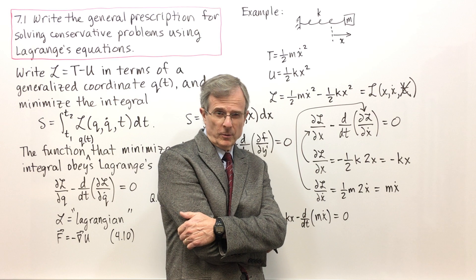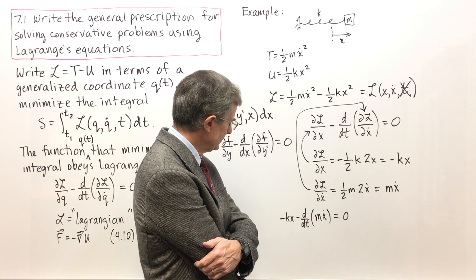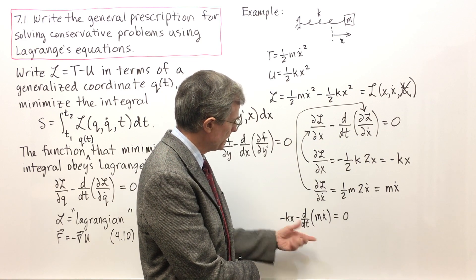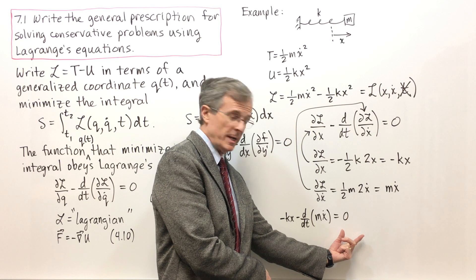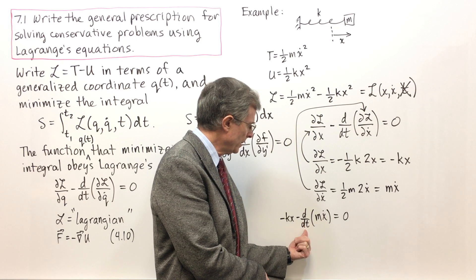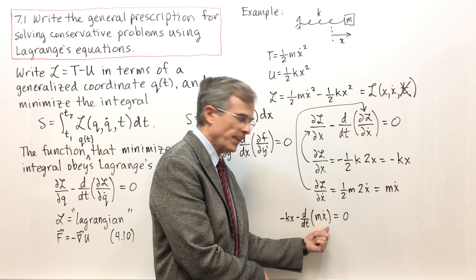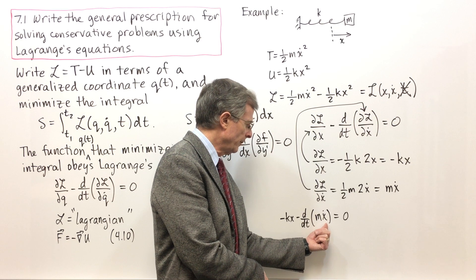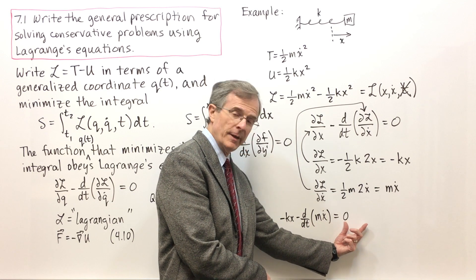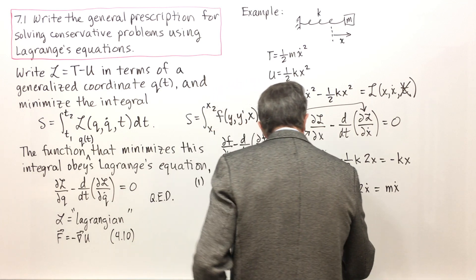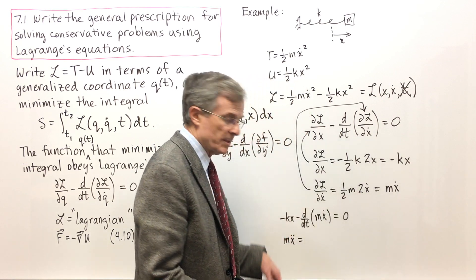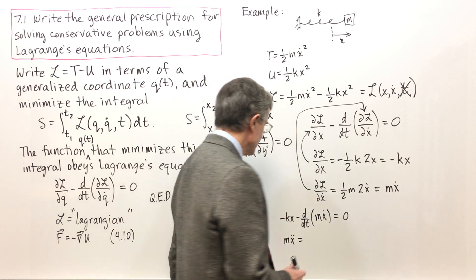Let me write this in another way. First of all, let me take this term over to the right-hand side so it becomes positive. And then we take this derivative, d by dt of mx dot. Mass is a constant. Derivative of x dot with respect to time is x double dot. So on the right-hand side, I have mx double dot. That's the right-hand side, which I'm going to convert to the left-hand side equals minus kx.